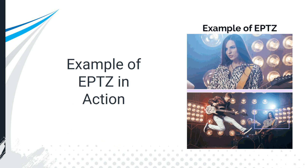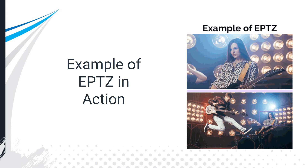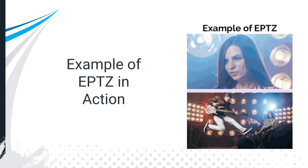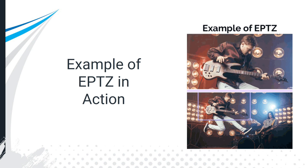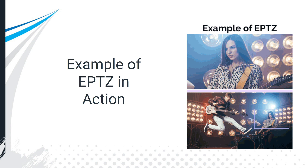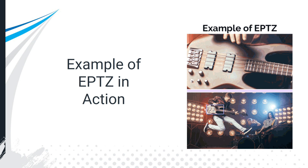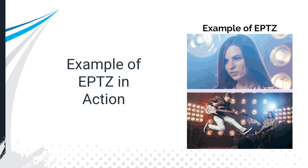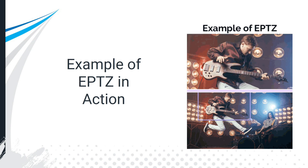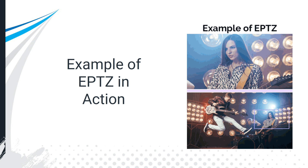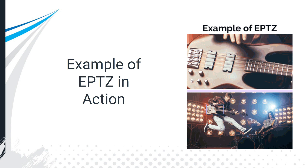We have to remember that electronic pan tilt zoom is different from optical zoom. With a 4K video camera, we can electronically pan, tilt, and zoom into a space, but the more we zoom in, the less resolution we're using. With optical zoom, the lens is actually zooming in with no digital changes to the image — no loss of quality. The more we zoom in digitally, the more we'll see a loss in quality.